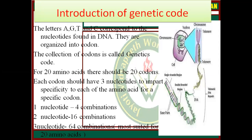This term was given by George Gamow. To understand how proteins are encoded, work began after the structure of DNA was discovered by James Watson and Crick. George Gamow postulated that a 3-letter code must be employed to encode the 20 standard amino acids used by living cells to build proteins. The letters A, G, T, and C correspond to the nucleotides found in DNA. They are organized into codons. The collection of codons is called the genetic code, and for 20 amino acids there should be 20 codons, each codon having 3 nucleotides to impart specificity to each amino acid.